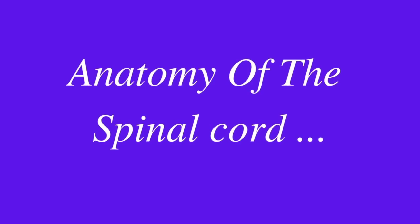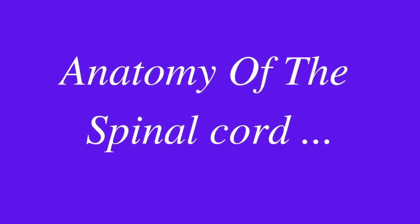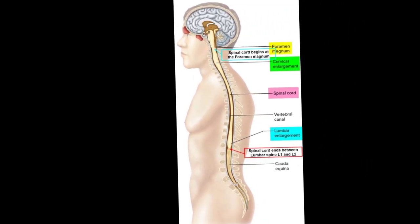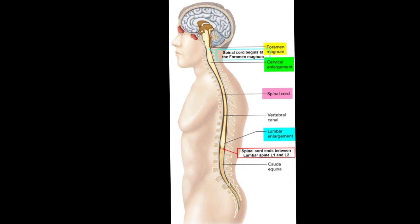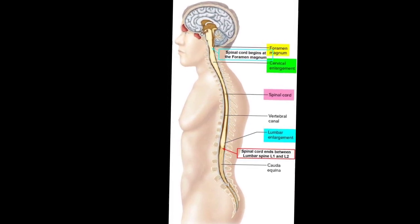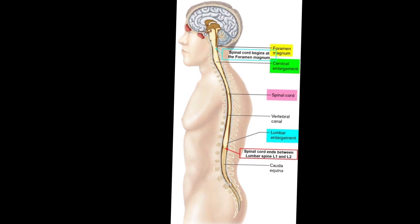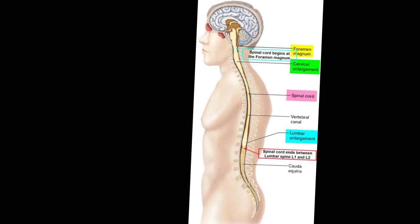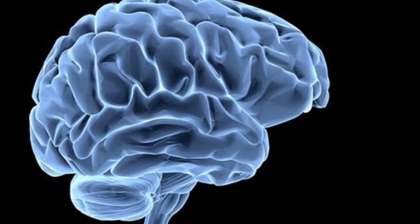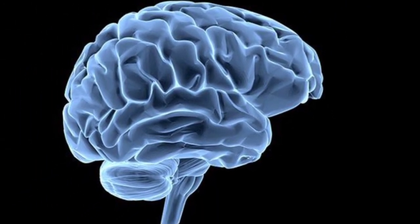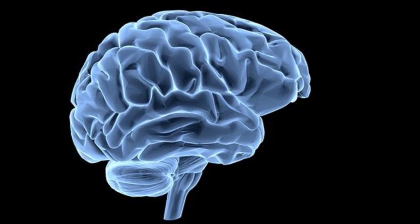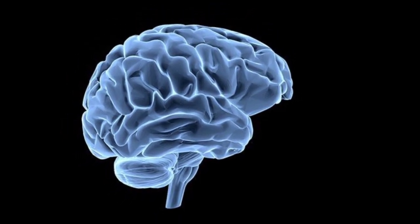The spinal cord is a soft, cylindrical column of tightly bundled nerve cells. It sends and receives information between the brain and the rest of the body. The spinal cord extends from the brain to the lower back through a canal in the center of the bones of the spine. Like the brain, the spinal cord is protected by three layers of tissue and is surrounded by cerebrospinal fluid, CSF, that acts as a cushion against shock or injury.